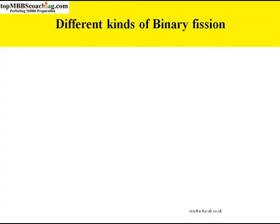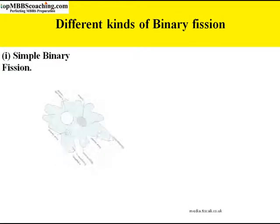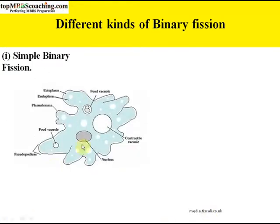Binary fission is also of different kinds, based on the plane of cytoplasmic division. The first is simple binary fission, which occurs when the cytoplasmic division passes through any plane — as in amoeba. There is no certainty of the plane of cytoplasmic division; the cytoplasm breaks from anywhere. So this type of fission is called simple binary fission.